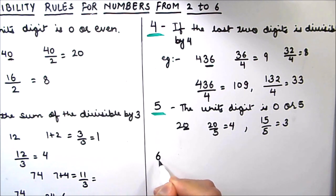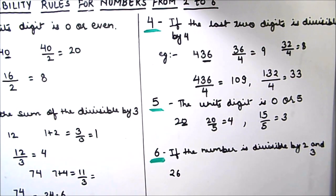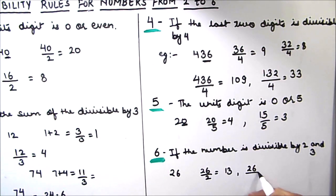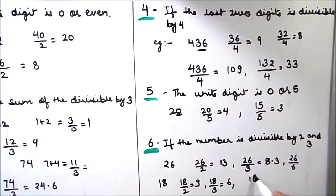Let's check the divisibility rule for number 6. The rule is: if the number is divisible by both 2 and 3, then the number is divisible by 6. For example, 26 is divisible by 2 but 26 is not divisible by 3, so 26 is not divisible by 6. Let's check 18: 18 is divisible by 2 and also divisible by 3, so 18 should be divisible by 6 — 6 times 3 is 18. So if a number is divisible by both 2 and 3, it is divisible by 6.